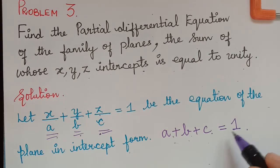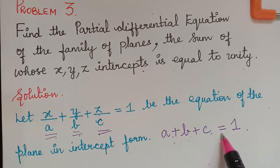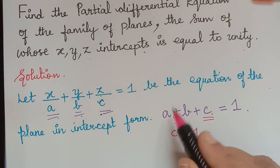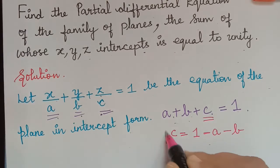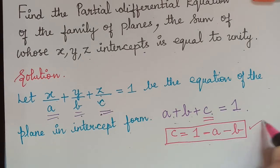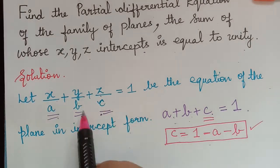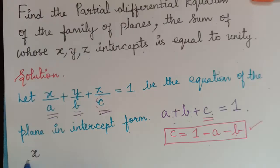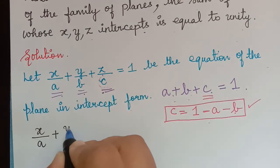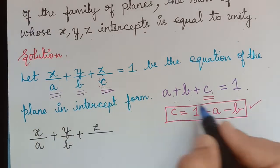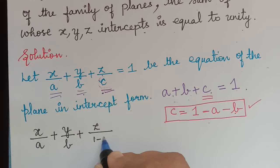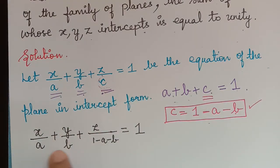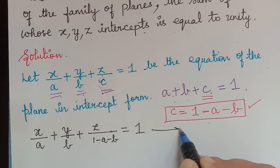With this condition, we can get c to be equal to 1 minus a minus b. We will substitute this value of c in the equation in place of c. So the equation is rewritten as x/a + y/b + z/(1 - a - b) = 1. We will mark this as equation 1.